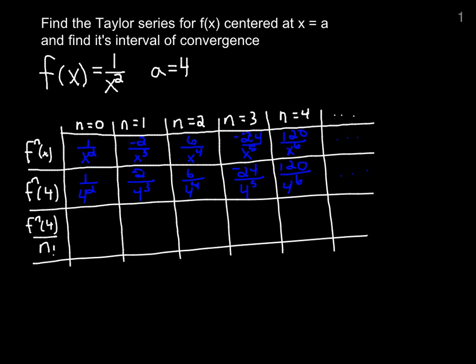Next, we divide by n factorial. In the first case, that's 0 factorial, that's 1, so we divide by 1, leave it as it is. 1 factorial is also 1, leave that as it is. Now we divide by 2 factorial. We have 6 over 4 to the 4, and there's also a 2 factorial down there, leaving you with 3 over 4 to the 4, because the 6 is 3 times 2 times 1, and we get the cancellation.